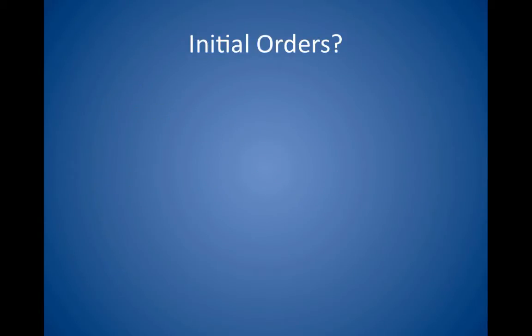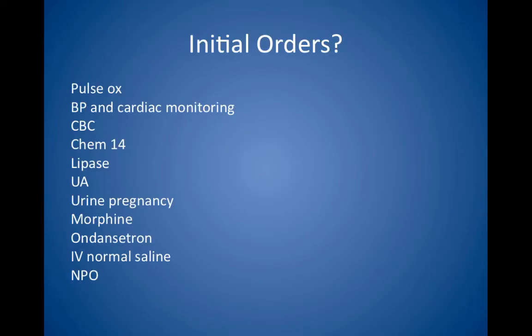What are your initial orders? Initial orders should include pulse oximetry, cardiac and blood pressure monitoring, CBC, Chem 14, lipase, urinalysis, urine pregnancy test, morphine, ondansetron, IV normal saline, and NPO status.